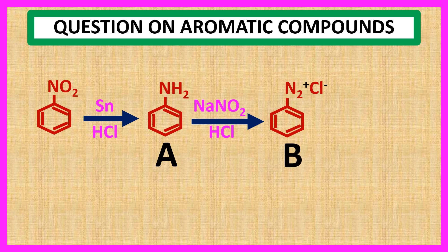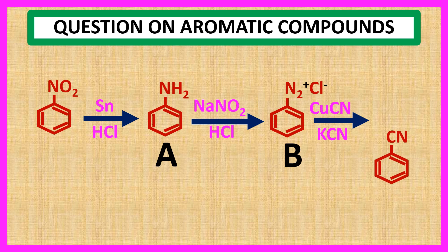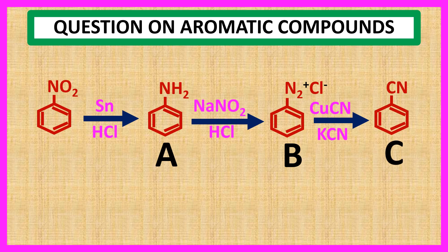Reaction of benzene diazonium chloride with CuCN and KCN forms cyanobenzene. So product C is cyanobenzene. Thank you for watching this video. See you.